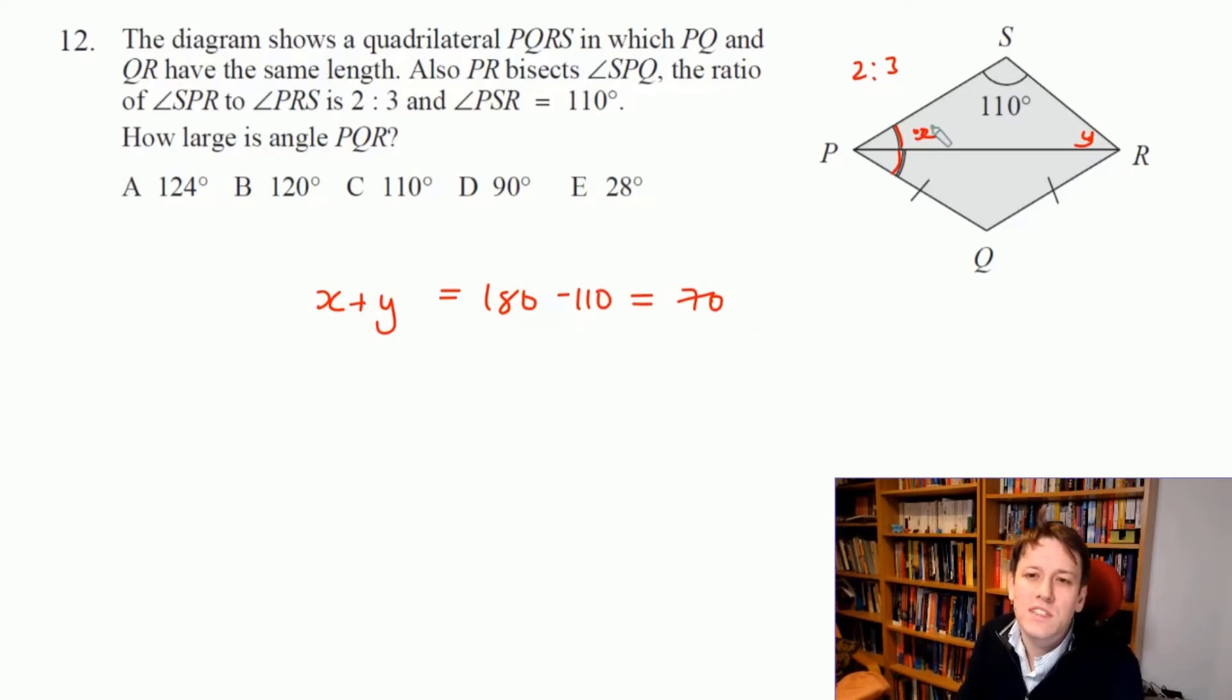There are five parts in total in this ratio, 2 plus 3 is 5, and 70 degrees in total, so each part must be 70 divided by 5, which is the same as 140 over 10, or 14.